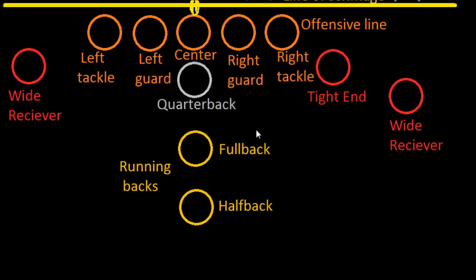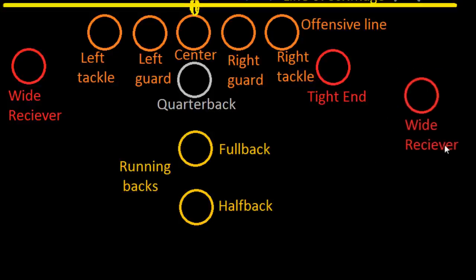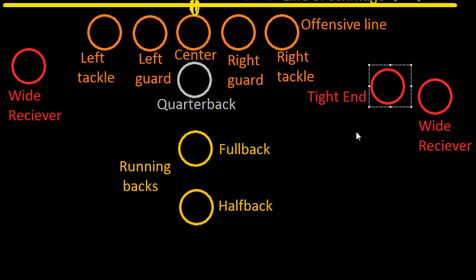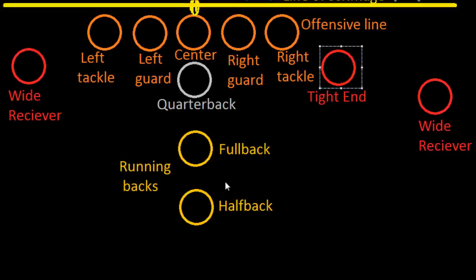Those are all of the positions on offense. There are 11 guys on both offense and defense, but they're not required to line up in this exact format. For example, a wide receiver could line up further out, or instead of a tight end you could have a third wide receiver. You might have only one running back, freeing up a player to become a second tight end or a third wide receiver. Players can swap on or off the field between each play, so the lineup doesn't have to be the same as the previous play.